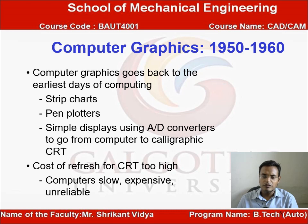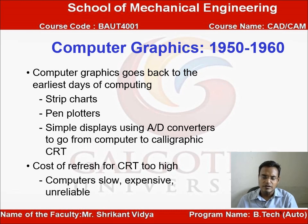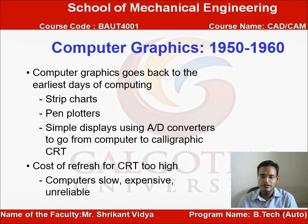In the history of computer graphics, from 1950 to 1960, computer graphics goes back to the early days of computing. Strip charts, paper plotters, and simple displays using audio were used. This allowed digital computers to use calligraphic CRTs, but the cost of refresh for CRT was too high and computers were slow, expensive, and unreliable.